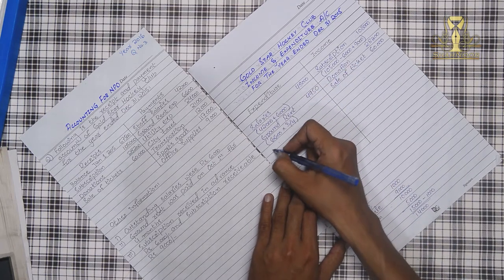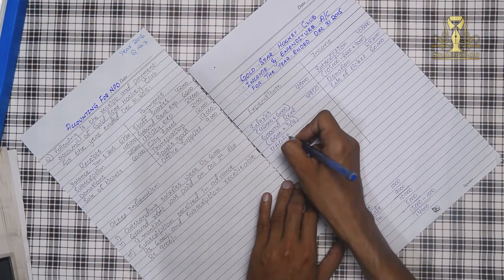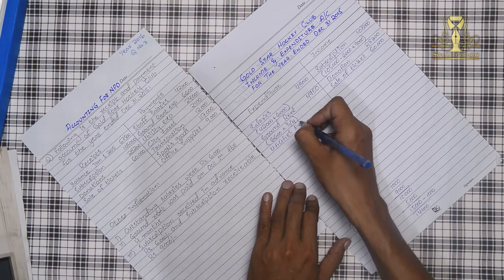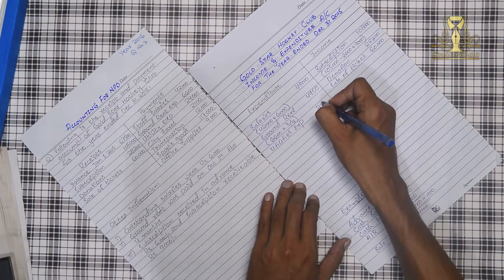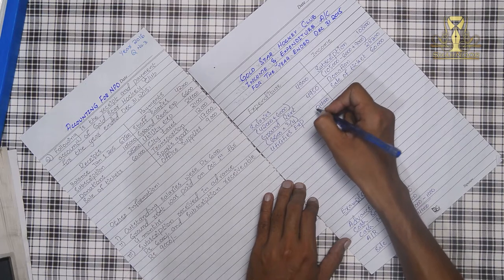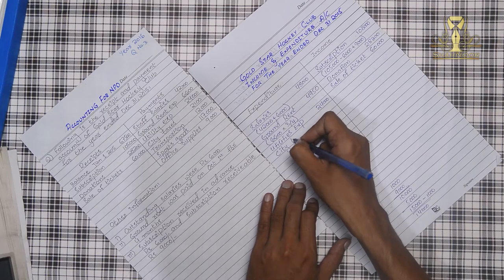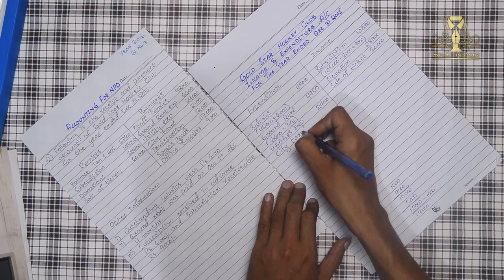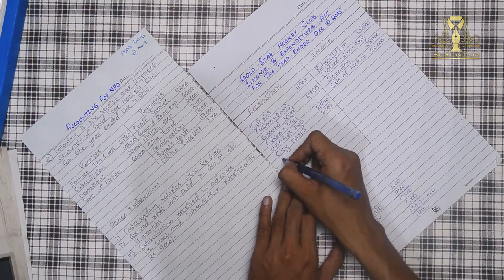Now our capital expense is done. Then we will put utilities, $6,500. Travel and transportation is $12,000.